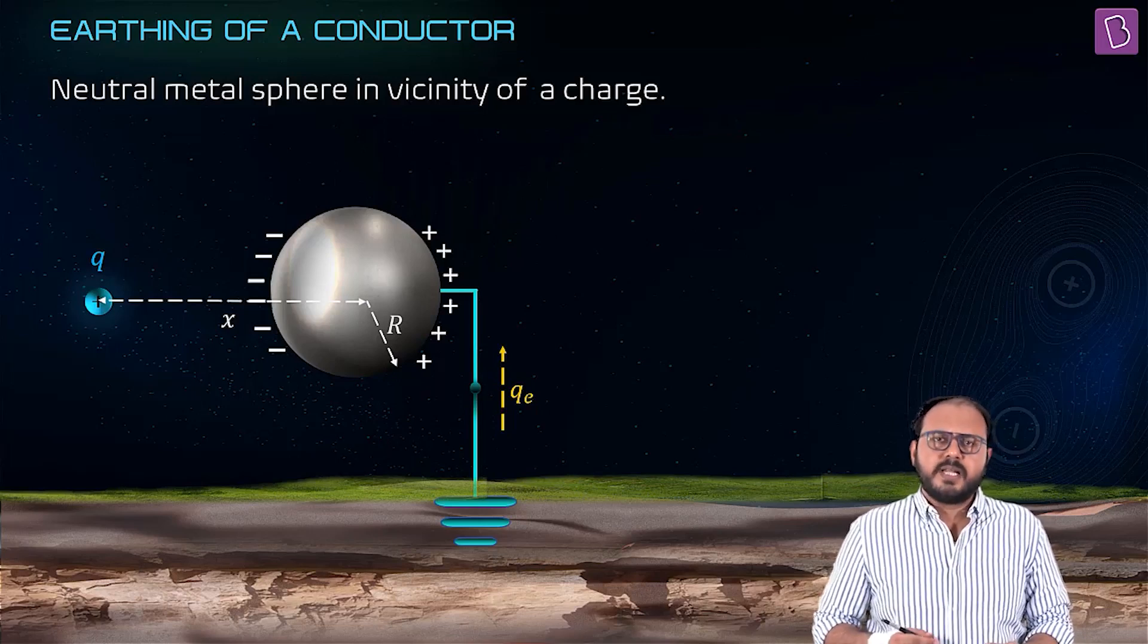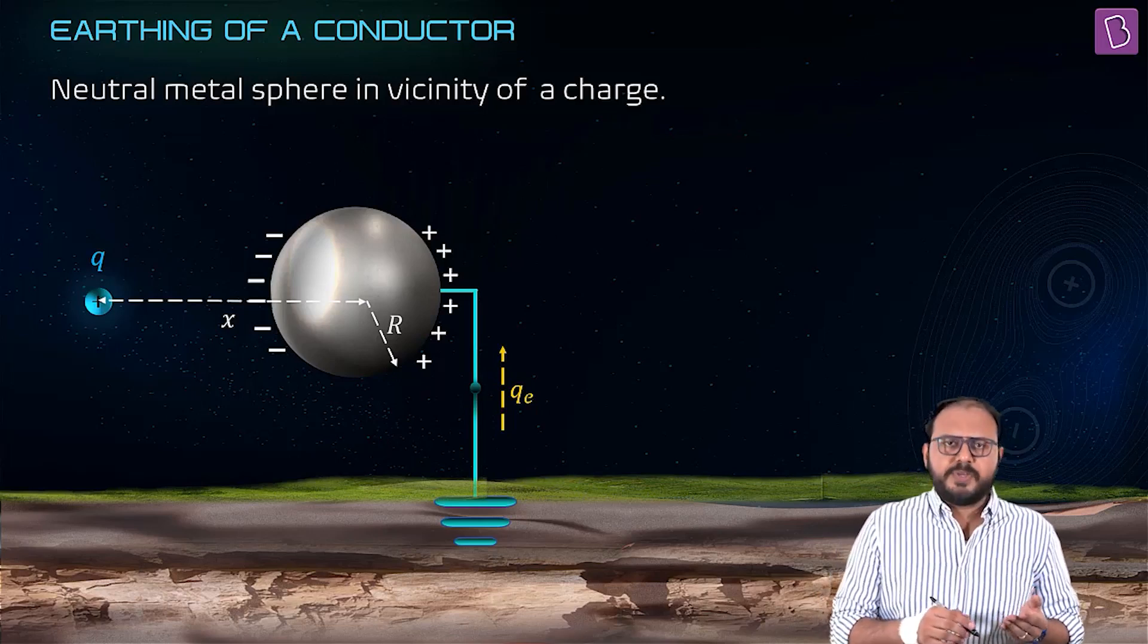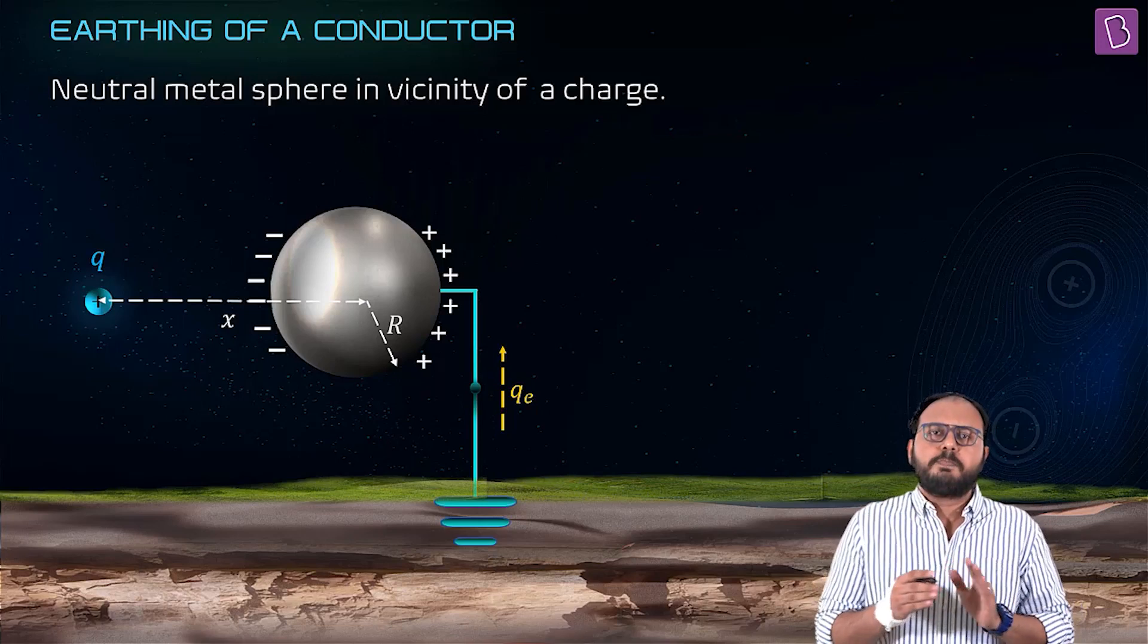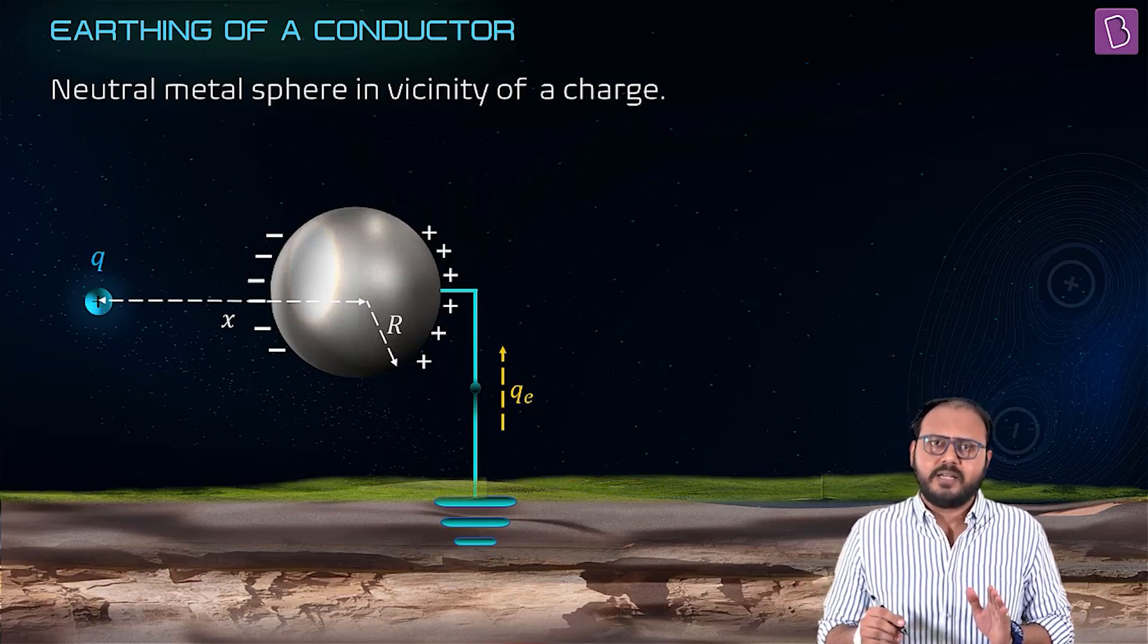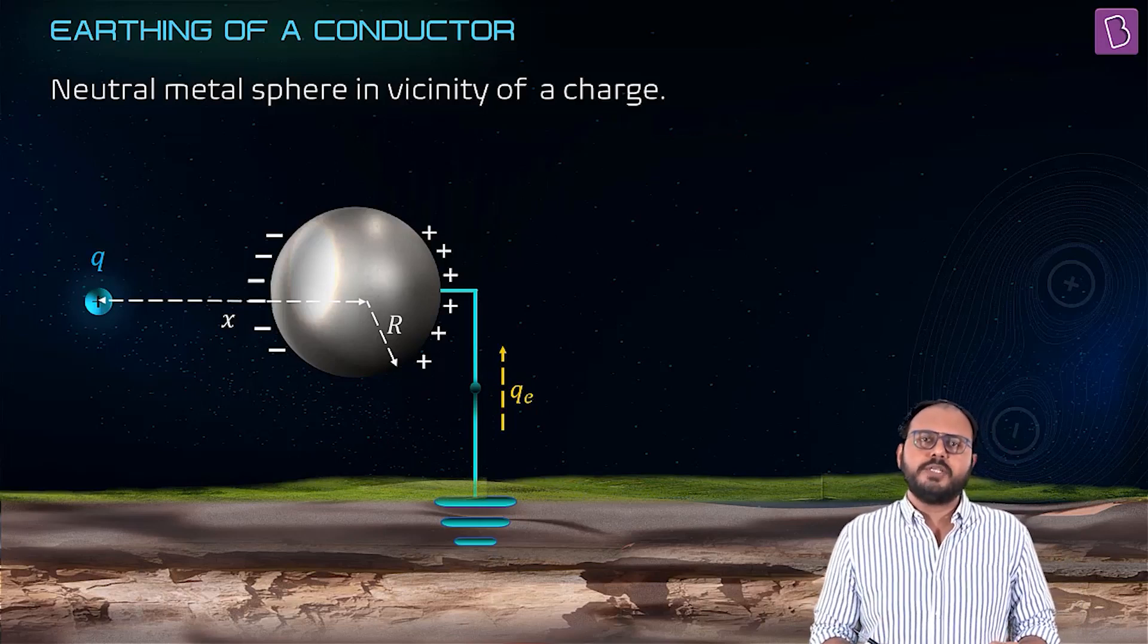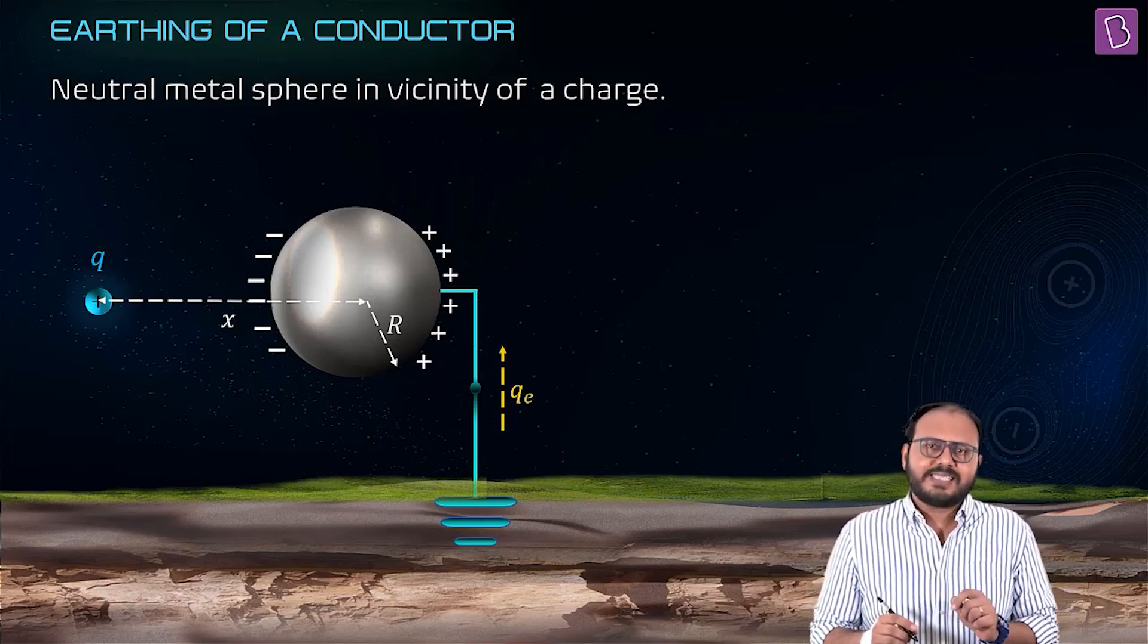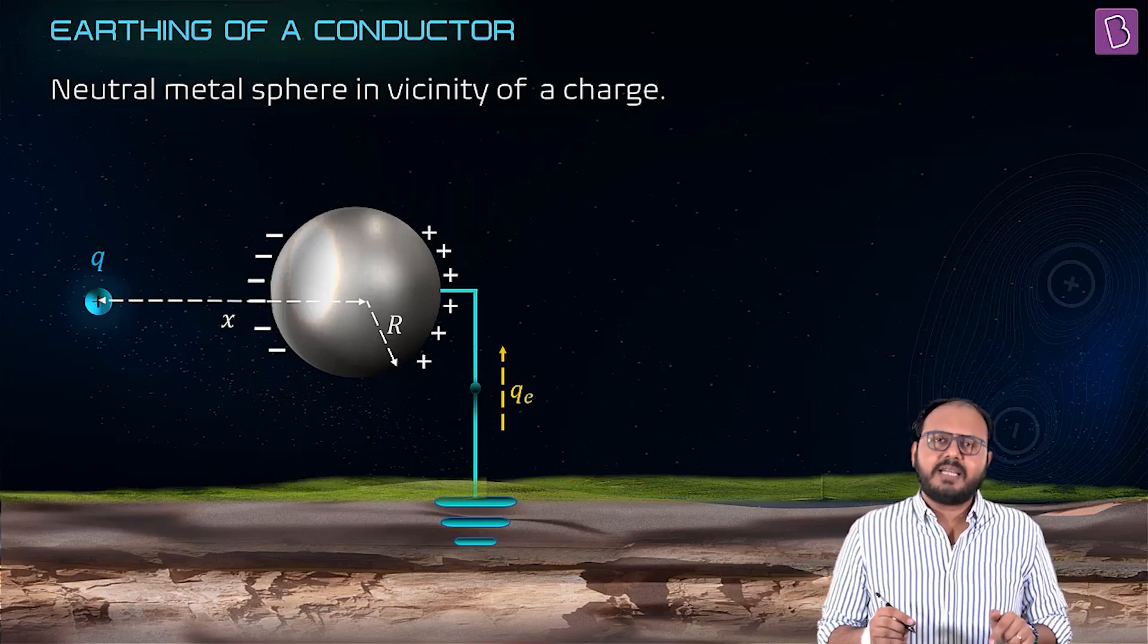But what about those minus-plus induction guys? Induction happens in pairs. This Q charge being in the vicinity of the conductor did not create a net charge, it just polarized the body. It just induced charges, not created. Let's say earth gave qe charge.